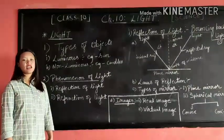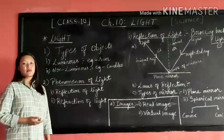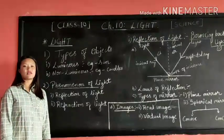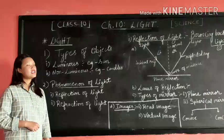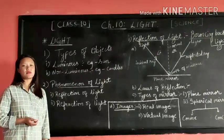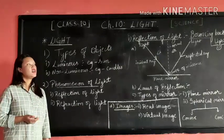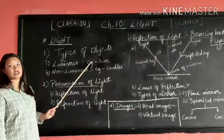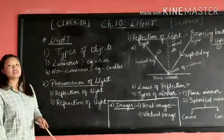Light not only helps us to see the objects around us, but it is also required by plants in order to synthesize their own food which in return gives us food. There are uncountable phenomena associated with light such as image formation by mirrors and lenses, twinkling of stars, the beautiful colors of rainbow and so on. So in this chapter we will learn in detail about light.